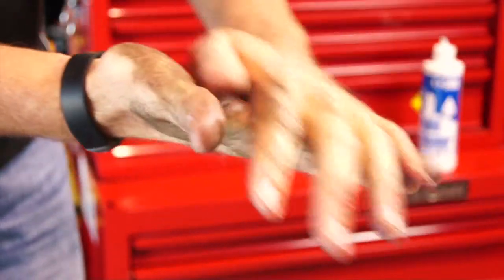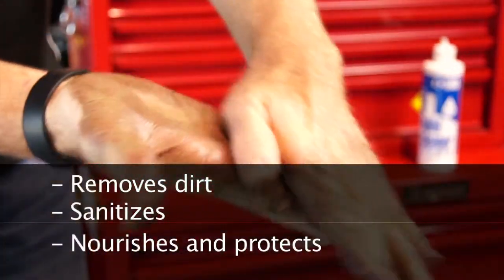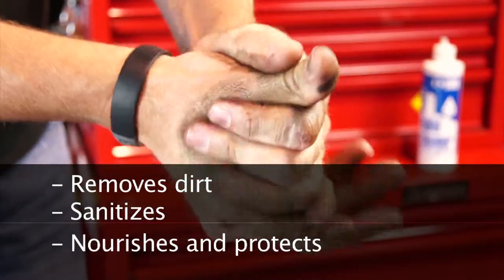K-Guard is a triple action formula that cleanses your hands of grease and grime, kills germs and bacteria, and uses lanolin and other selected oils to nourish and protect your skin.